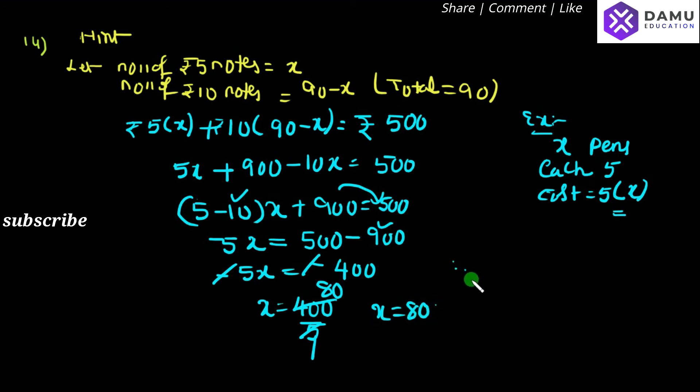what you can say is, the number of 5 rupee notes will be x, that is x will be equal to 80.